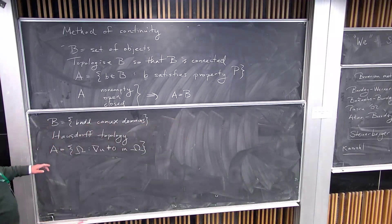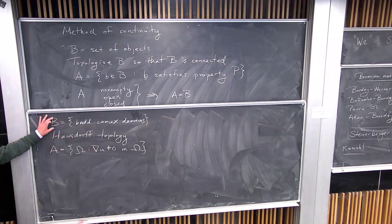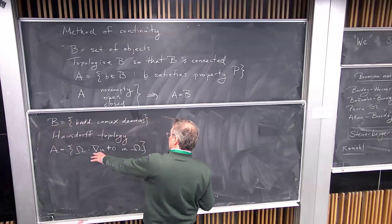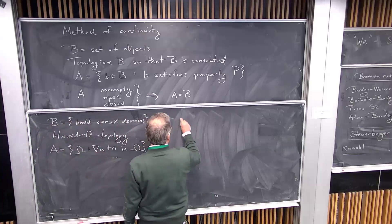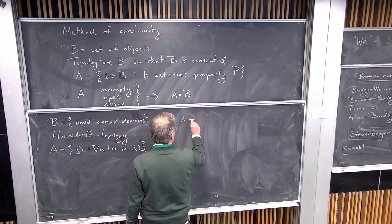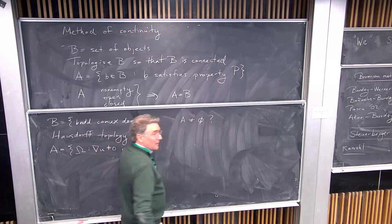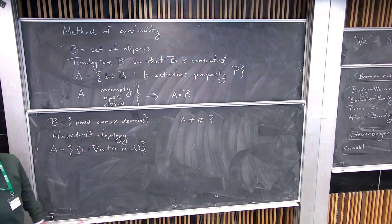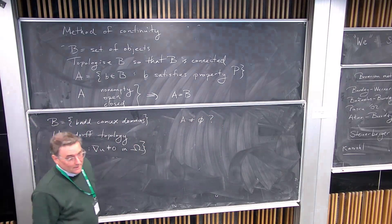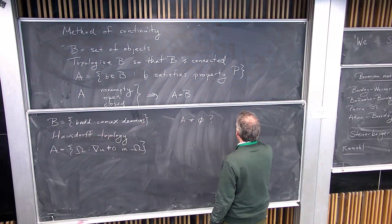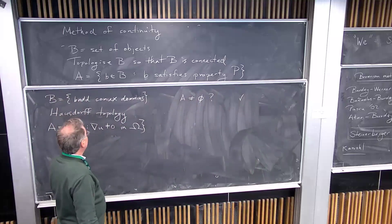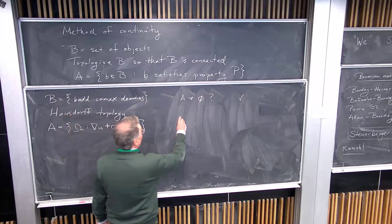B is connected because you can continuously deform one convex domain into another. A is nonempty because it contains, for example, Lip(1) domains, obtuse triangles, squares, and rectangles from previous results. A is closed by continuity of eigenfunctions: if a sequence of domains converges in Hausdorff, their eigenfunctions converge and critical points on the boundary remain on the boundary.